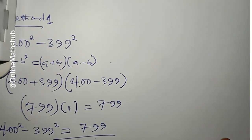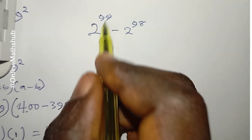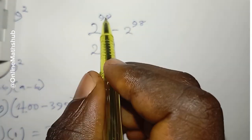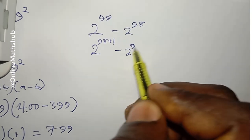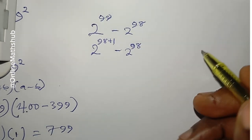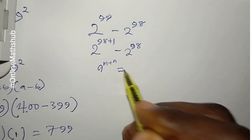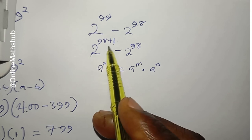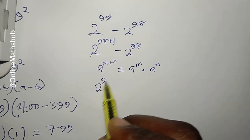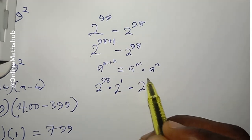There is also another similar problem you may want to check out. Suppose you're required to solve 2 to the power 99 minus 2 to the power 98 without a calculator. I can write 2 to the power 99 as 2 to the power (98 + 1). Using the rule of indices — if you have a to the power (m + n), you expand it as a to the power m multiplied by a to the power n — I get 2 to the power 98 times 2 to the power 1, minus 2 to the power 98.